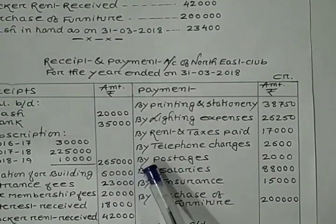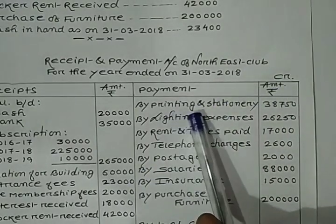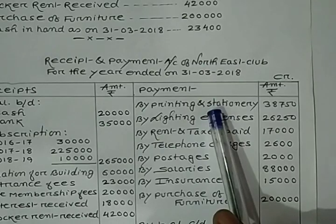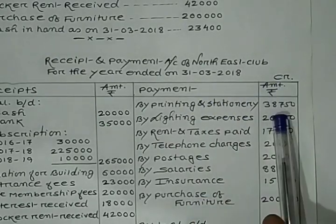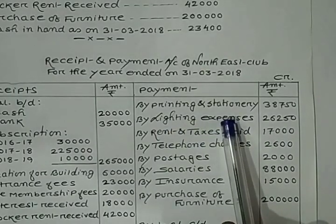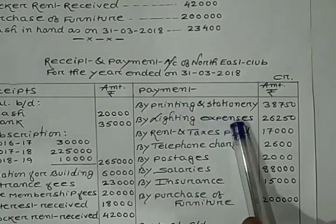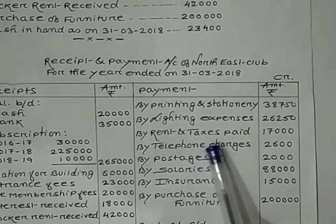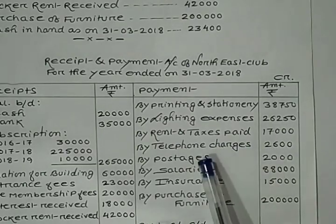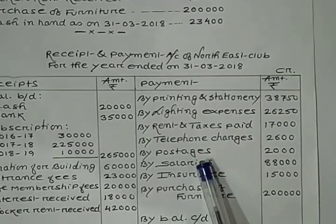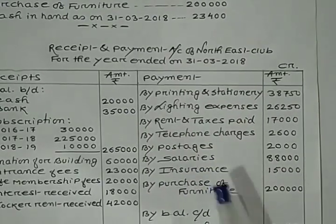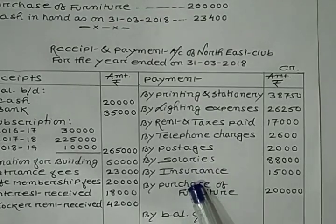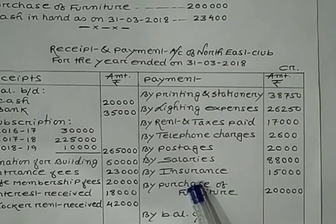Whatever the expenses, that will be recorded on the credit side. Printing and stationery is an expense — credit side, that is payment side of Receipt and Payment Account. Lighting expenses — expenses given, so credit side. Rent and taxes paid — payment, so credit side. Telephone charges — payment. Postage — payment. Salaries — payment. Insurance — payment. Purchase of furniture — payment. All these items related to expenses or payments are recorded on the credit side of Receipt and Payment Account.